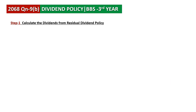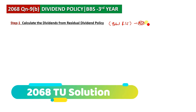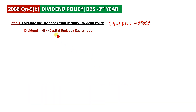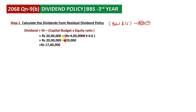The residual dividend policy is calculated first. Available retained earnings equals net income minus capital budget multiplied by the equity ratio. The capital budget is 4.5% of capital investment. The formula is: net income minus (capital budget × equity ratio).